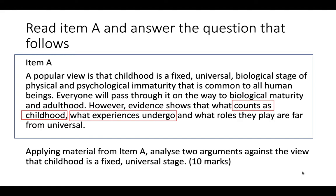'What experiences they undergo' — children and adults have different experiences in our society, but across the world this varies across cultures. We have a very Westernised experience of childhood being distinct from work, whereas children in other cultures may experience work differently. 'What roles they play are far from universal' — here you could talk about toxicity, the idea that children are now exposed to far more adult material via the internet and the reversal of what's been happening. You could analyse that by looking at the information hierarchy — children's roles are shifting rather than being fixed.